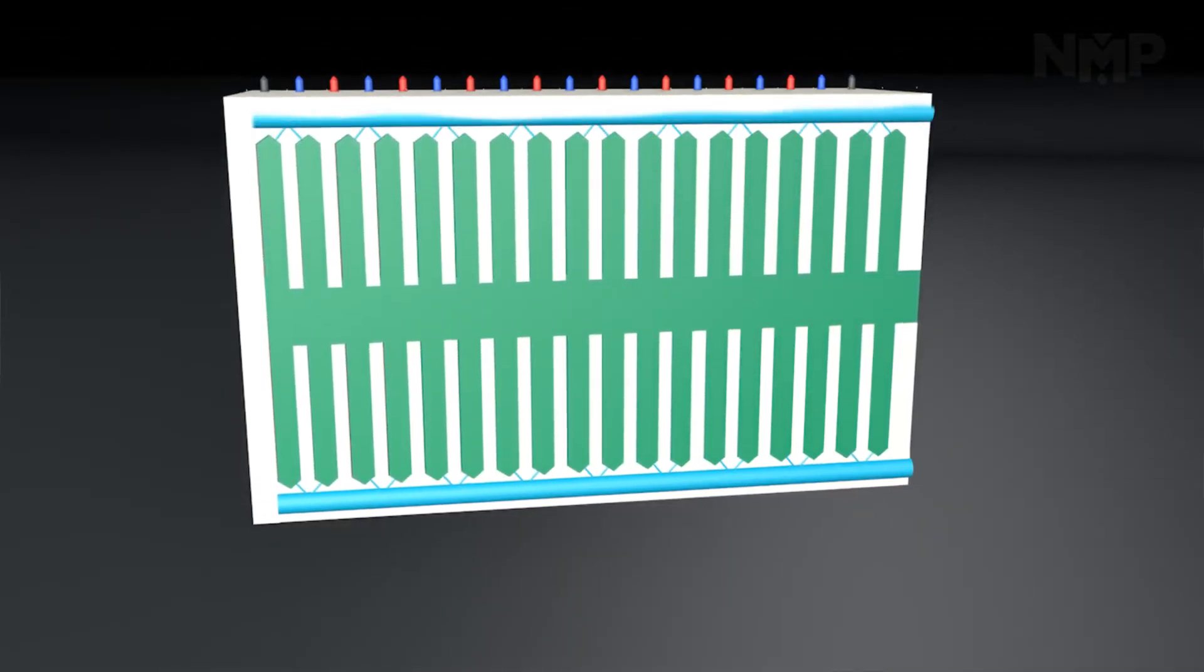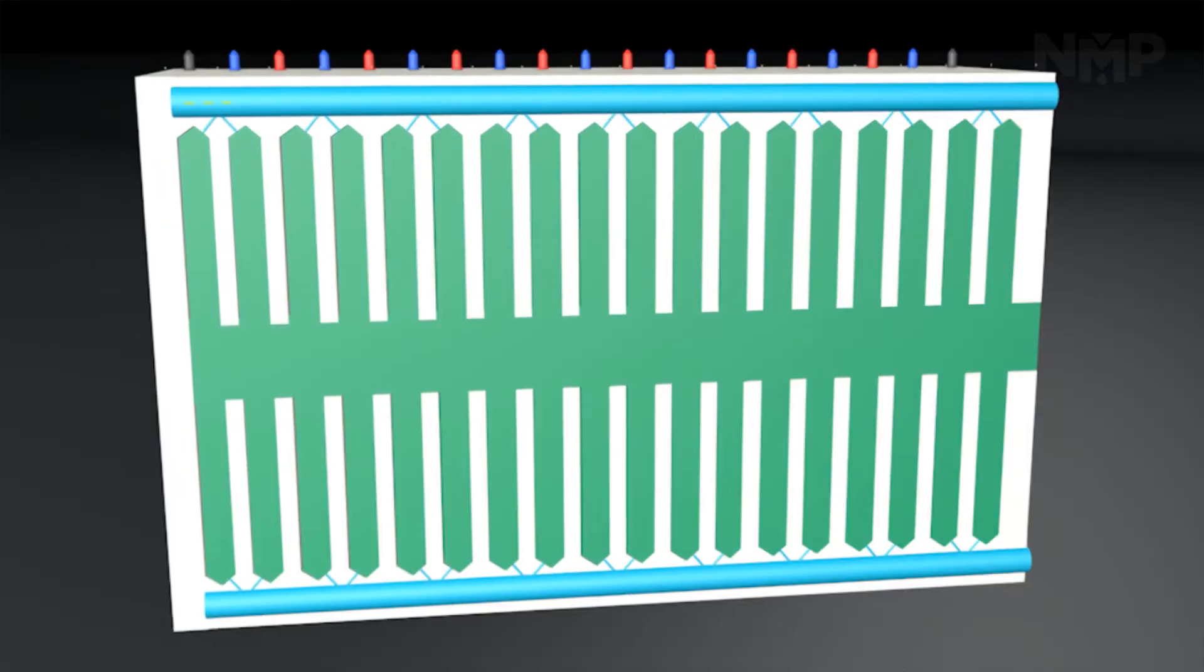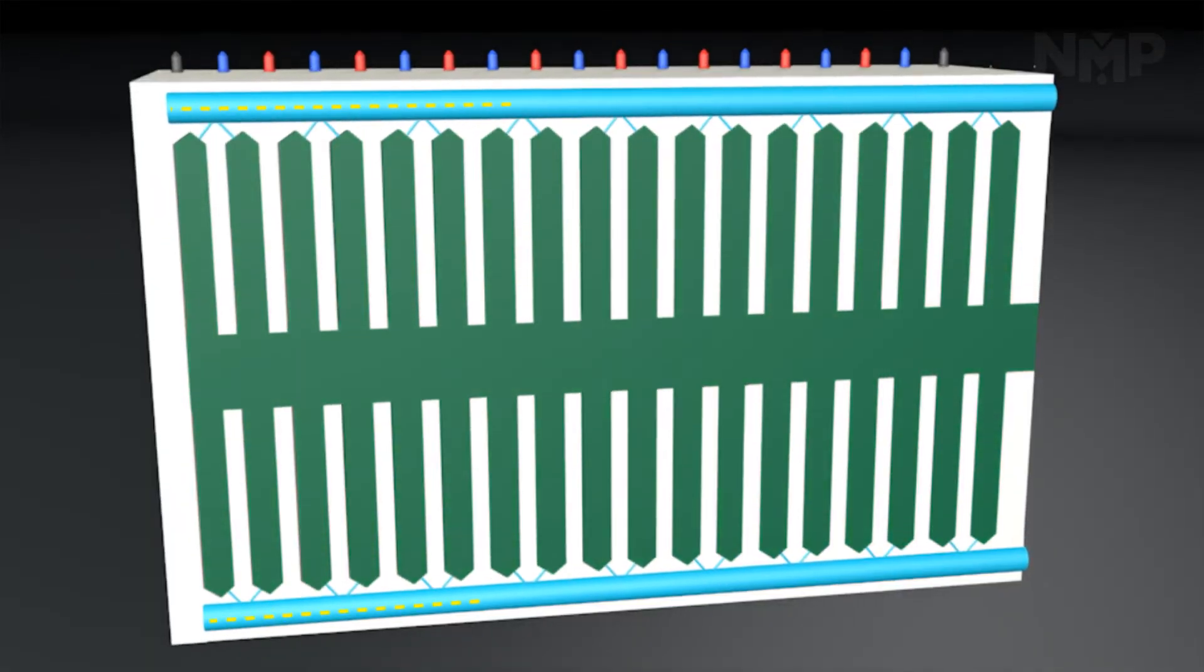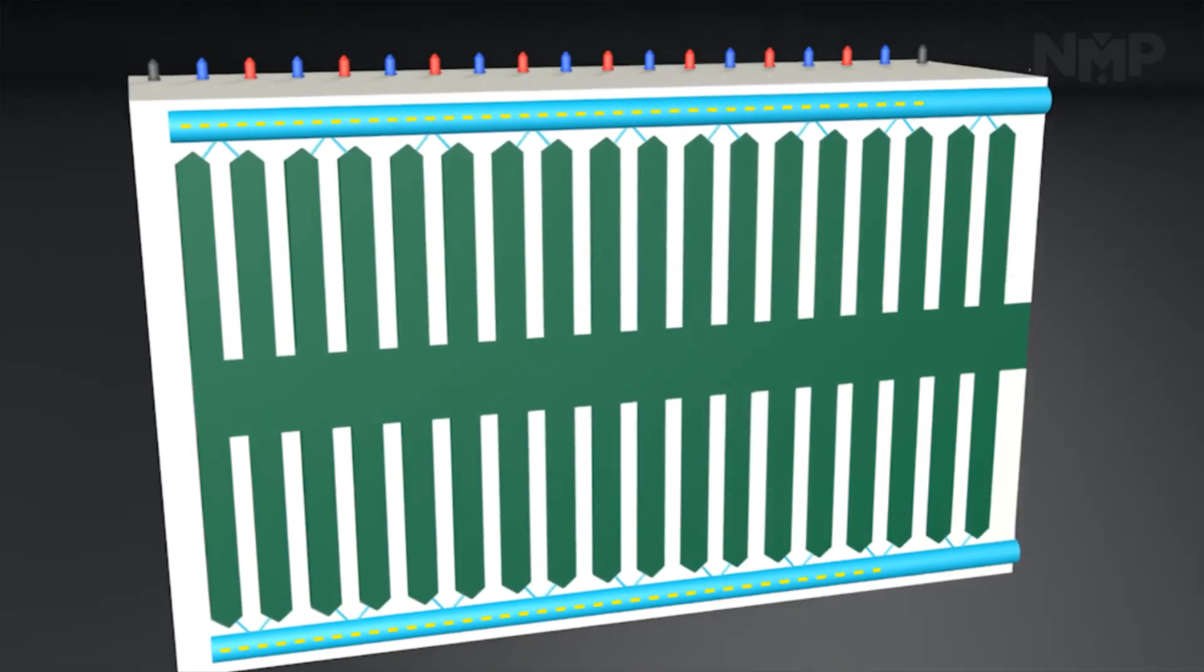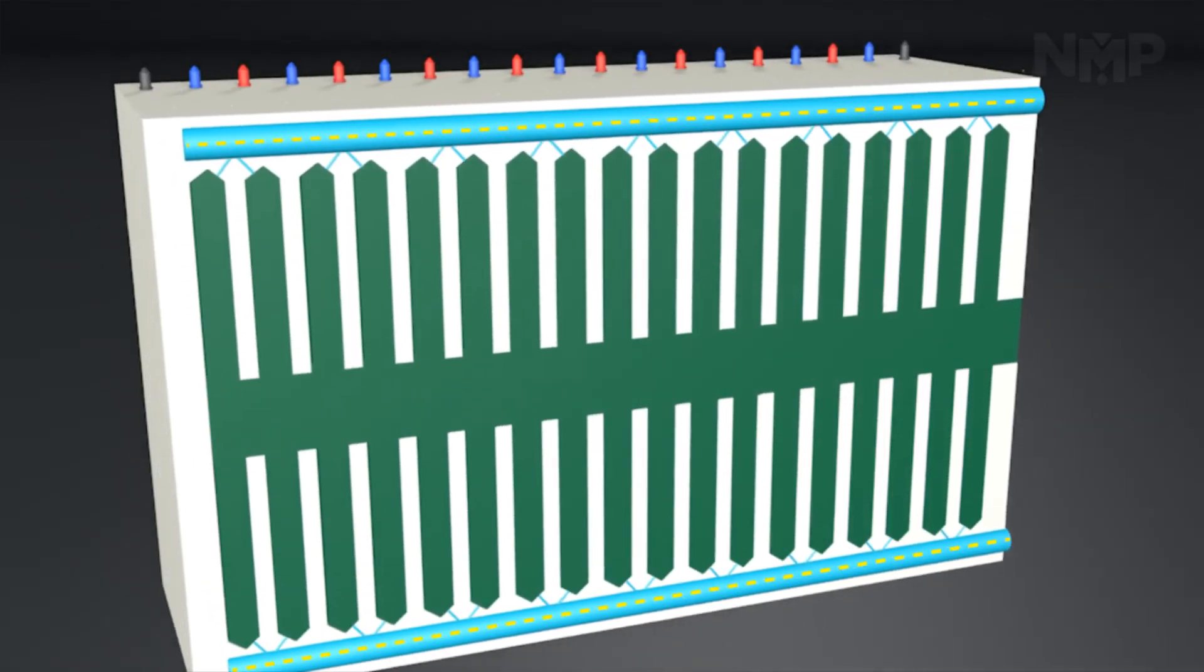During the filtration cycle, solids start to deposit on the filter cloth, trapping the ensuing particles and building a filter cake. The filter cake acts as a depth filter for solid-liquid separation.